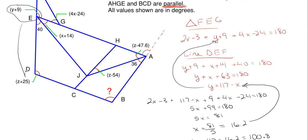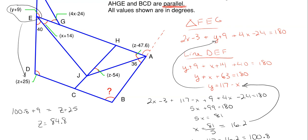Now that we have y = 100.8, we can find the angle at E, which equals 100.8 + 9. We then set this equal to the angle at D, which is z + 25, because of the corresponding parallel line angles. Rearranging and solving, z = 84.8.